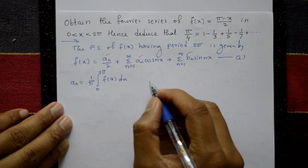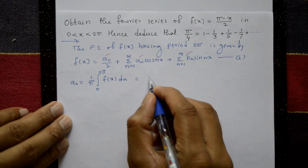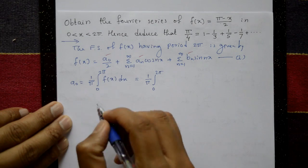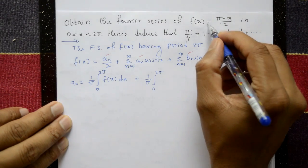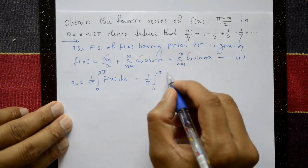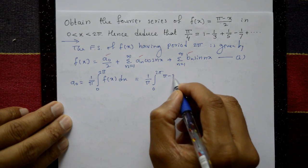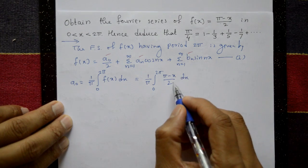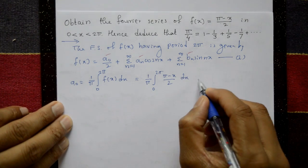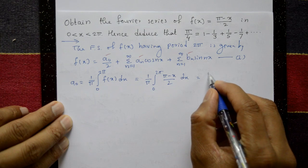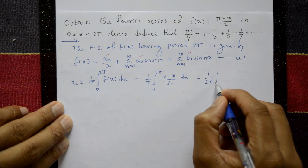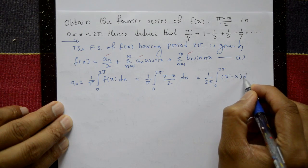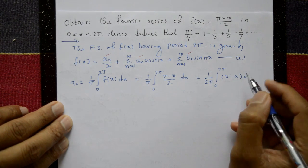Substituting f(x) = (π - x)/2, this equals (1/π) × integration from 0 to 2π of (π - x)/2 dx. Taking the 2 outside: a₀ = (1/2π) × integration from 0 to 2π of (π - x) dx.